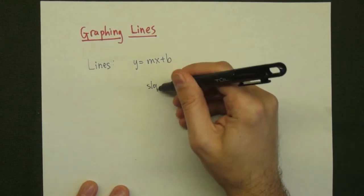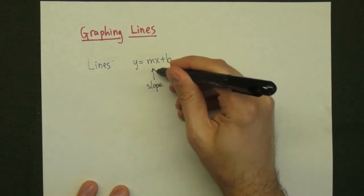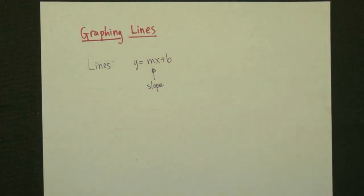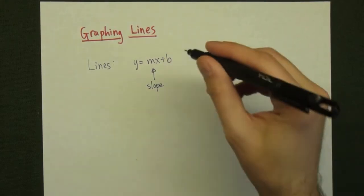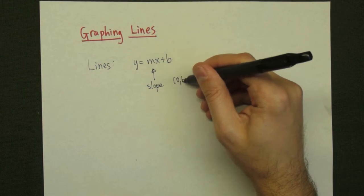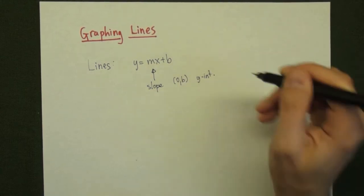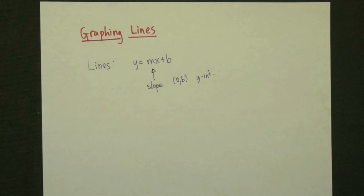With this form, the m will tell you the slope, and the b will allow you to find the y-intercept. If b is a number, 0,b is the y-intercept, the place where the line intercepts the y-axis.